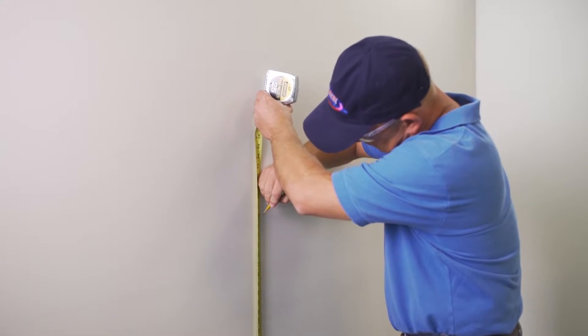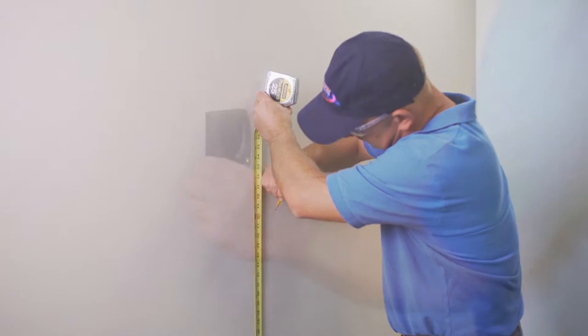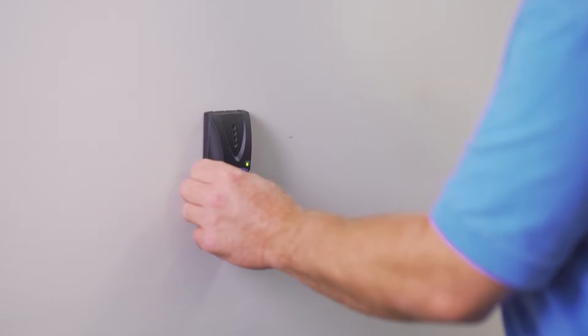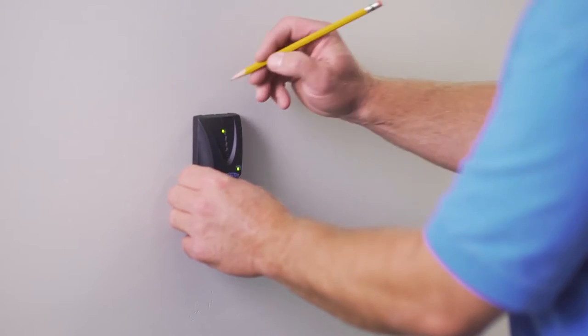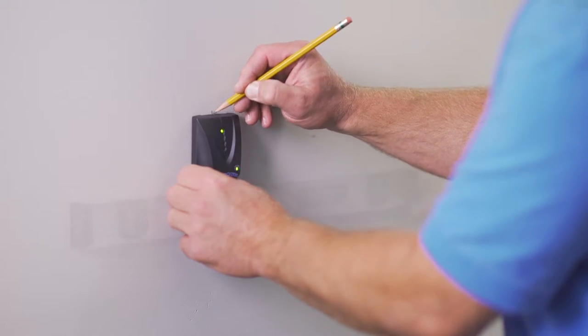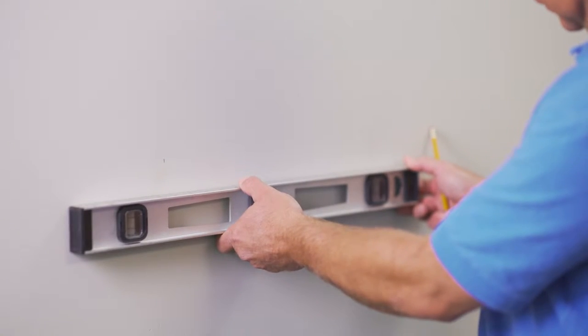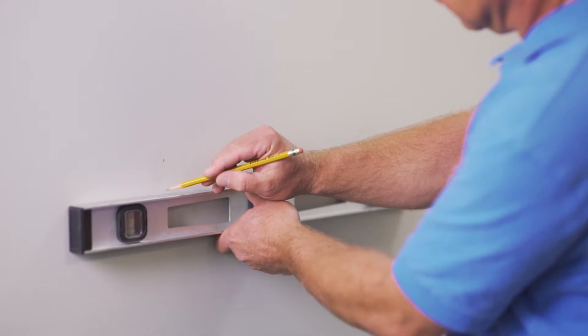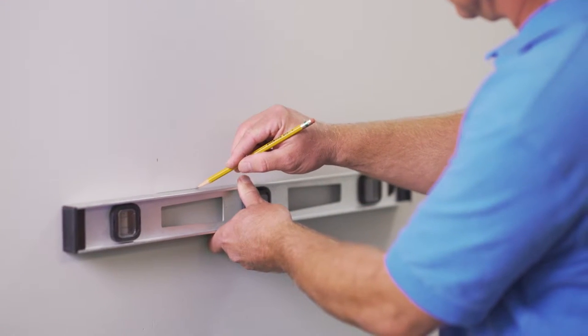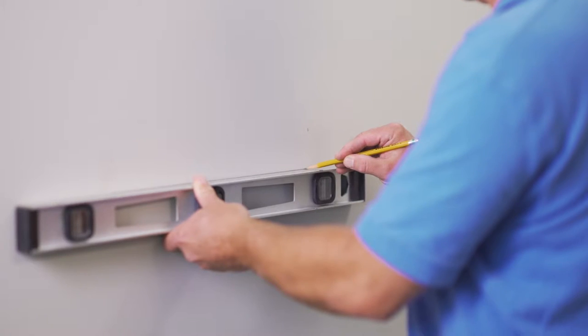Mark a location that is 48 inches from the floor. Using a stud finder, find and mark the inside edges of the stud cavity where the dispenser will be mounted. Draw a level line at the mark from the floor, between the inside edges of the stud cavity. This will be the bottom of the hole cutout.